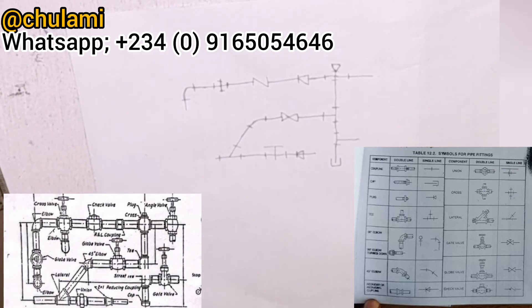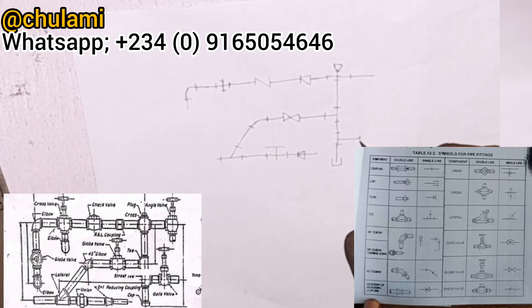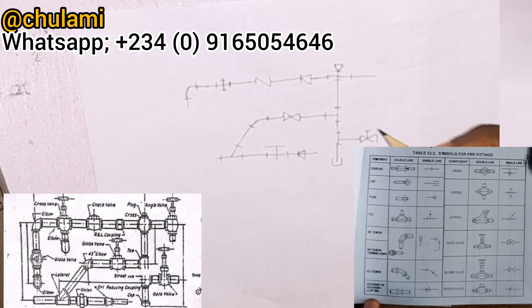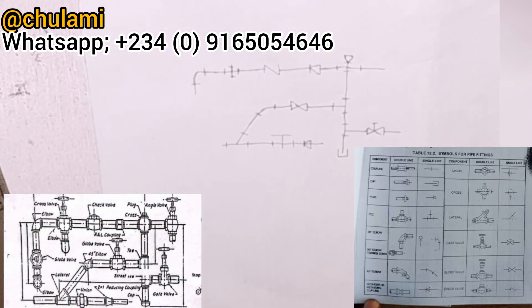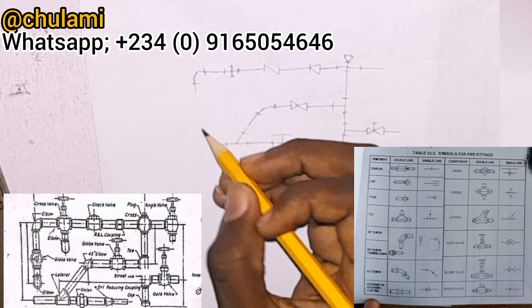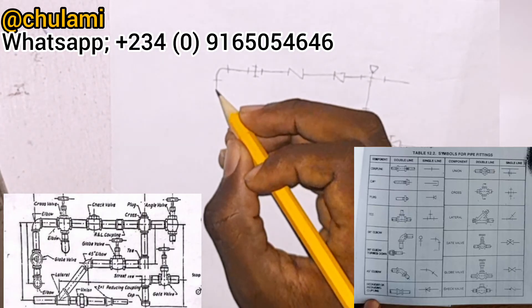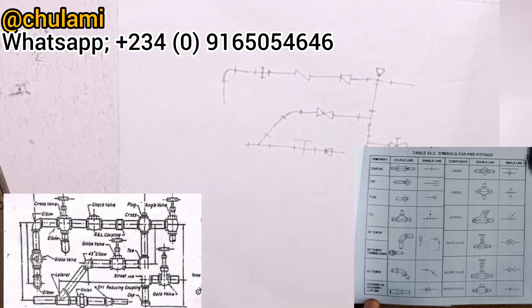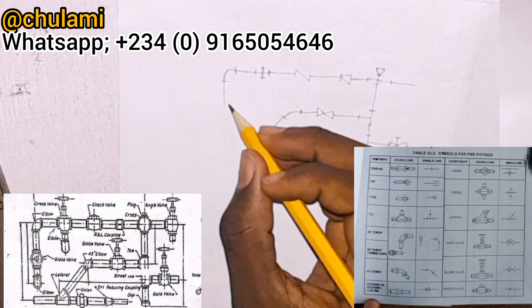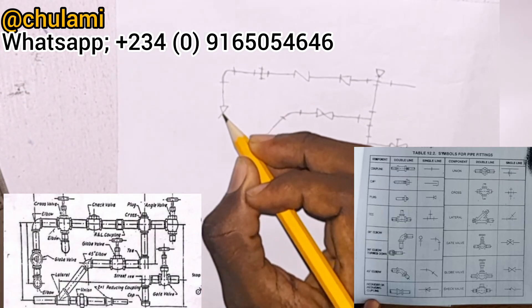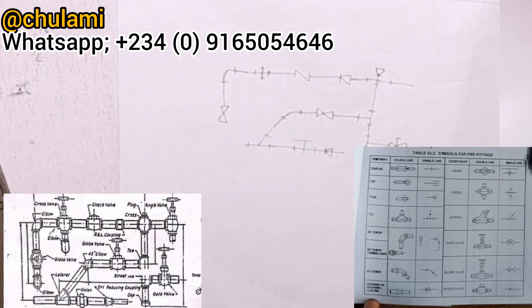Then we have a gate valve, whose symbol is drawn like this. Coming over here, there is a globe valve, whose symbol is drawn like this.